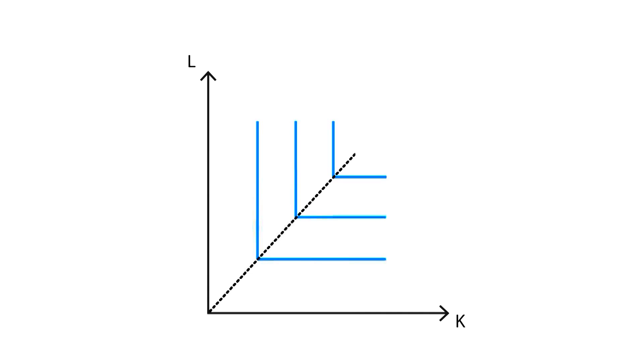Our last example of isoquant curves shows the graphical representation of complementary inputs. Production will only be increased when both factors are increased in the same proportion.